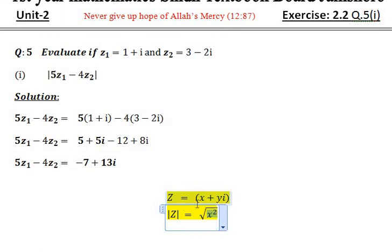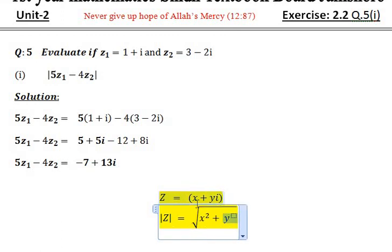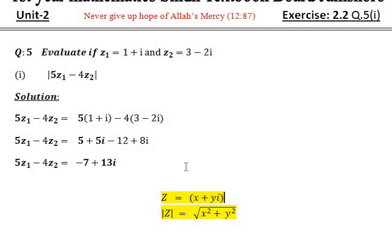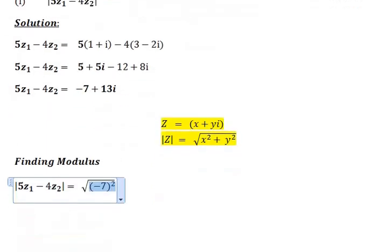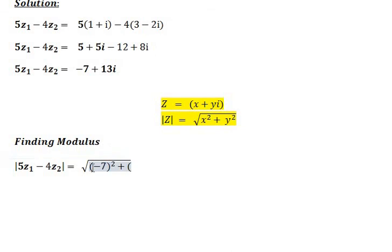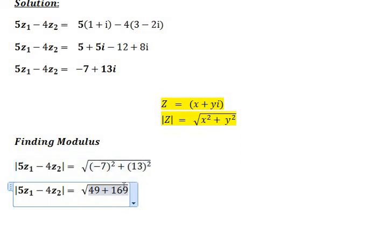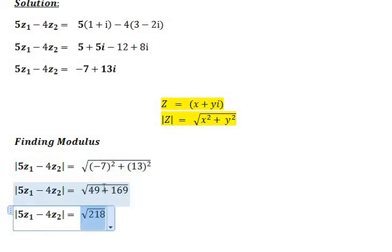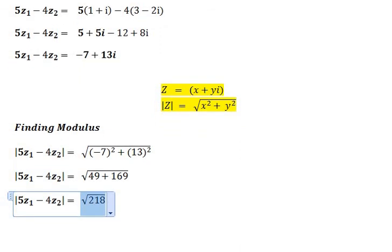Now similarly suppose x is equal to minus 7 here and y is equal to 13 here, so just you have to use formula. Similarly under radical, x square plus y square means under radical minus 7 square plus 13 square, and we know very well that 7 square equal to 49 and 13 square equal to 169, and 49 plus 169 equal to 218.